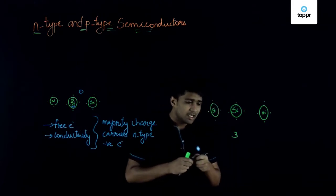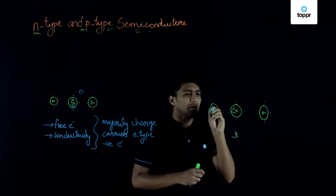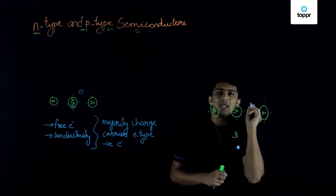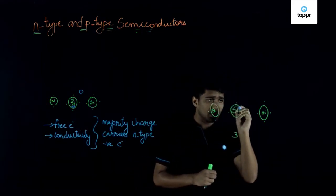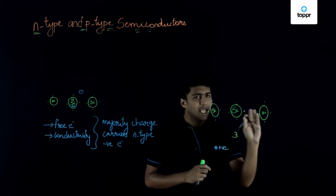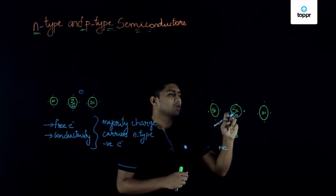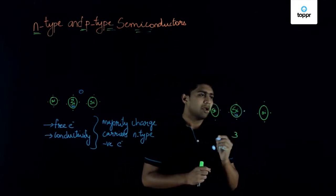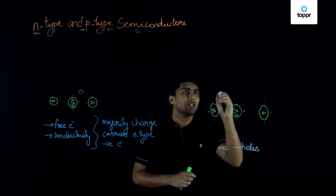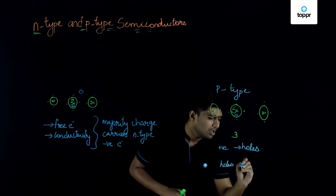Here we can understand that the neighboring atoms have 4 free electrons, but the atom replaced with the trivalent impurity has only 3 free electrons. The majority charge carriers become positive because the 4th place becomes empty. We have added a trivalent impurity, so in this atom's outermost shell there are only 3 electrons, and the 4th place becomes empty — this empty place we call a hole. When talking about p-type semiconductor, the majority charge carriers are holes, which carry a positive charge.